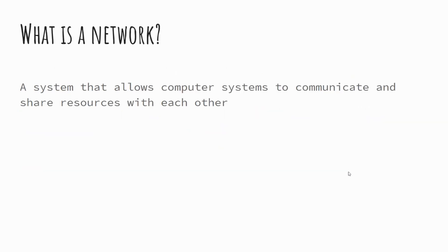First of all, it's worth identifying what a network is. A network is essentially a number of computer systems connected together, enabling them to communicate and share resources with each other. The devices connected may not just be traditional desktop computers — we're talking about things like mobile phones, games consoles, tablets, and all sorts of internet-connected devices.